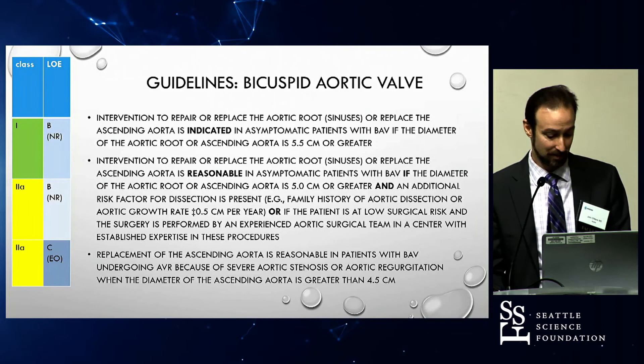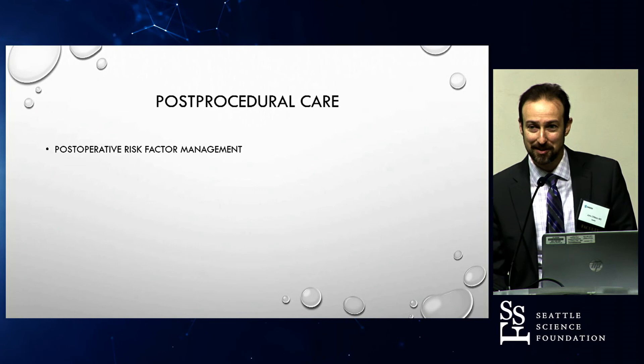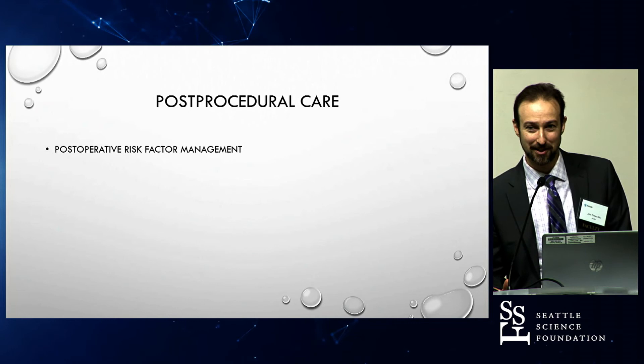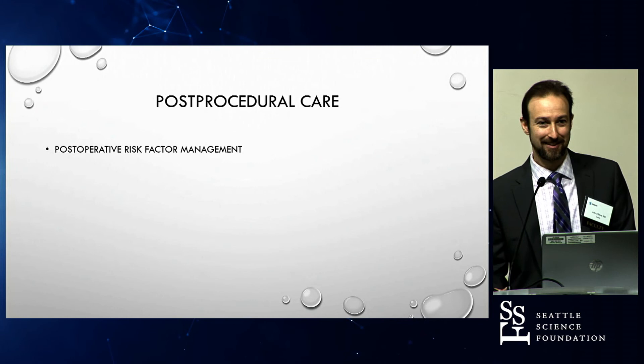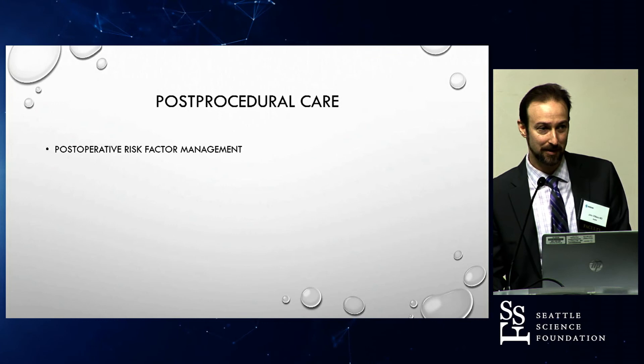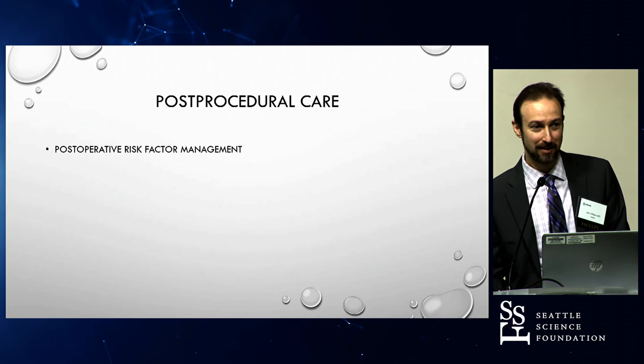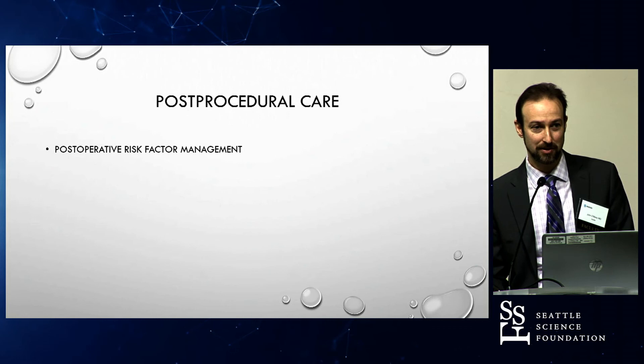Post-procedural care comes down to basically the same things as preoperative care. Patients stop smoking in the hospital but may return to it when they go out. So continued smoking cessation is really important. Activity restriction and weight limits still apply — these patients are not cured. Even though their aneurysm may have been repaired, they're not cured of the disease and are still at risk. We need to control their blood pressure.